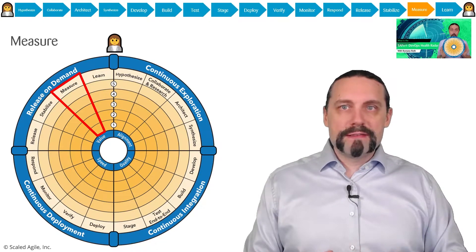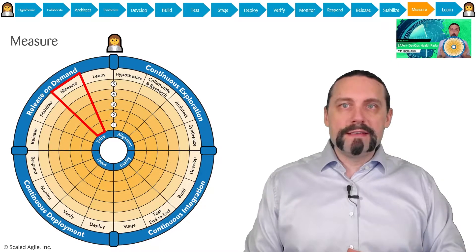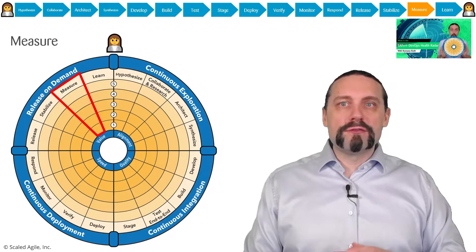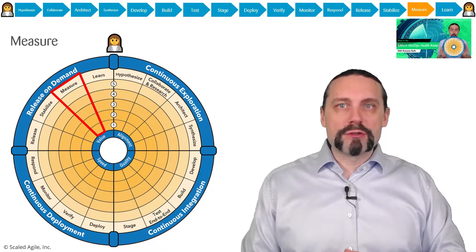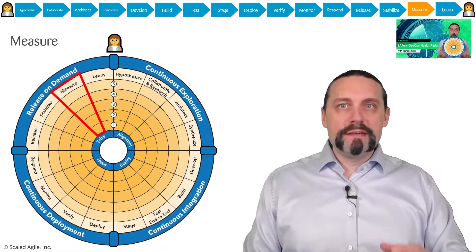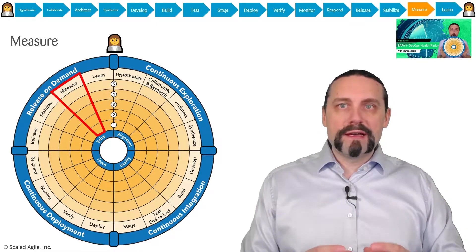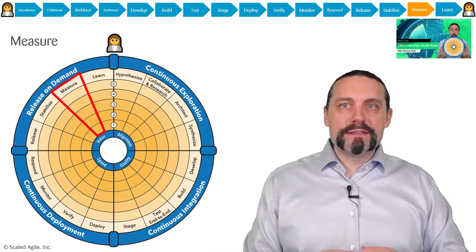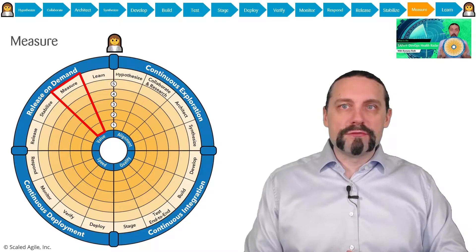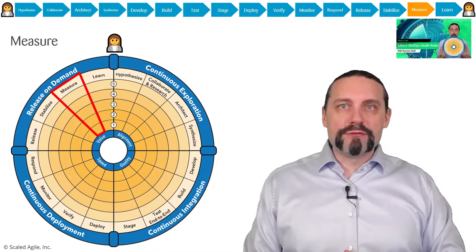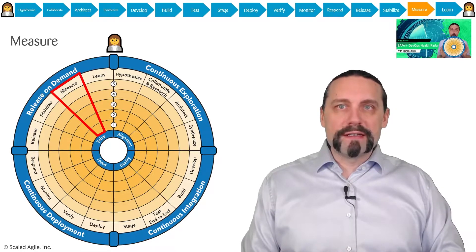When the business says now is the right time to release the new functionality to users, we switch on the feature toggle. With the switched on feature toggle we stabilize our production environment. We check if everything works according to the SLAs. And with that we measure.